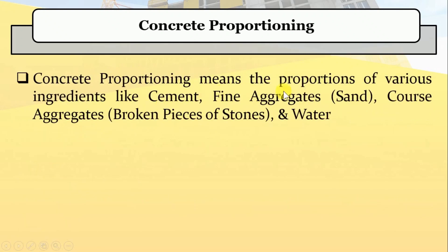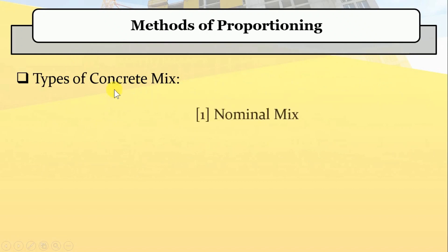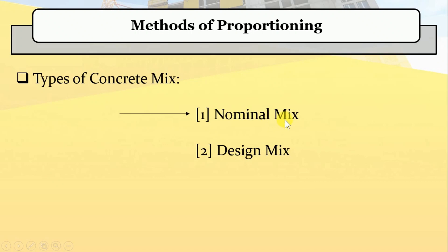Concrete proportioning means the proportions of various ingredients in a concrete — like cement, fine aggregates, and coarse aggregates. Mixing these ingredients in a definite proportion is called the concrete mix. There are two different methods of proportioning: the first one is nominal mix and the second one is design mix. When proportions of cement, aggregate, and water are adopted based on an arbitrary standard, the concrete produced is termed as nominal mix concrete. Nominal mix concrete is used in works where quality control requirements for design mixes are difficult to implement. When the task of deciding proportions is accomplished using certain established relationships, the concrete produced is called design mix concrete.